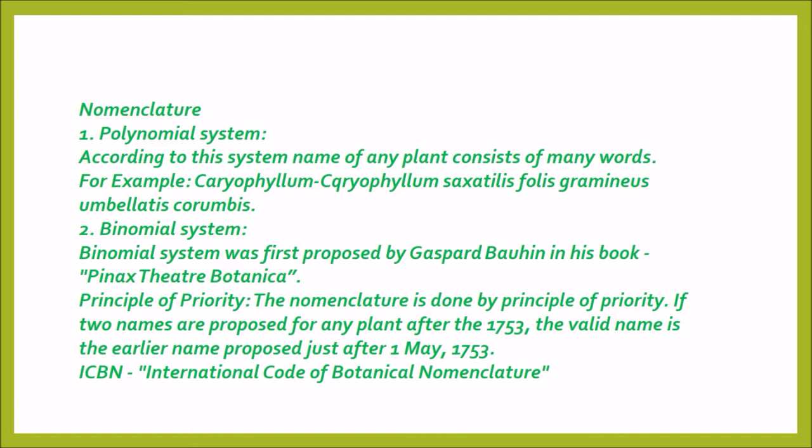Binomial system — bi means two. The binomial system was first proposed by Gaspard Bauhin in his book Pinax Theatri Botanici. The principle of priority: the nomenclature is done by the principle of priority. If two names are proposed for any plant after 1753, the valid name is the earlier name proposed just after 1st May 1753, according to the International Code of Botanical Nomenclature.